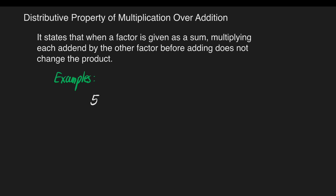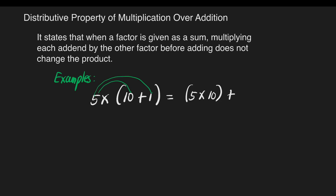Let's have 5 times the quantity of 10 plus 1. We can do distributive: 5 times 10 plus 5 times 1. We can multiply: 5 times 10 is equal to 50, then 5 times 1 is equal to 5. That gives us 55.